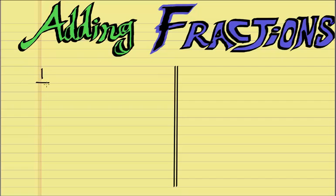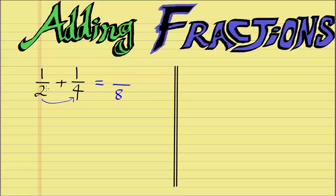Say if we had 1/2 plus 1/4. What we first need to do is multiply the denominators together. So in this case 2 times 4 which is 8, and we write that in the position of the denominator under the division line. Then secondly we multiply the numerator of the first fraction by the denominator of the second fraction. So 1 times 4 is 4, then we carry over the addition sign, and we also multiply the numerator of the second fraction by the denominator of the first fraction. So 1 times 2 is 2.